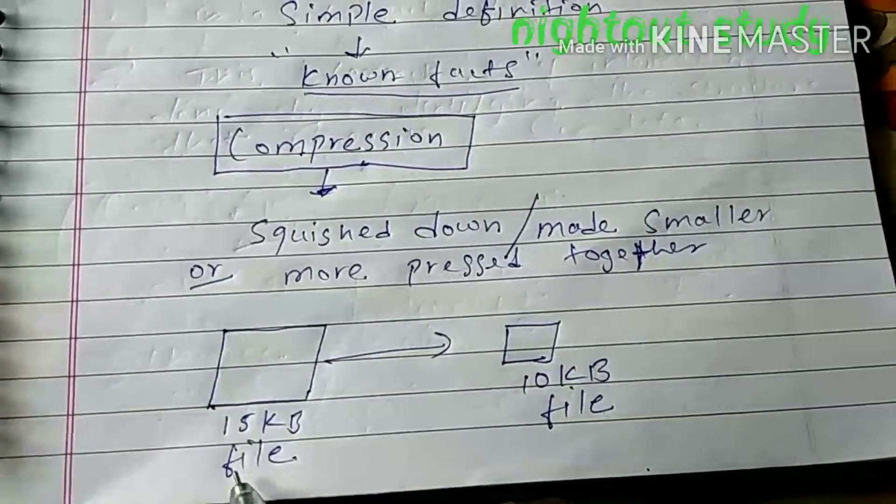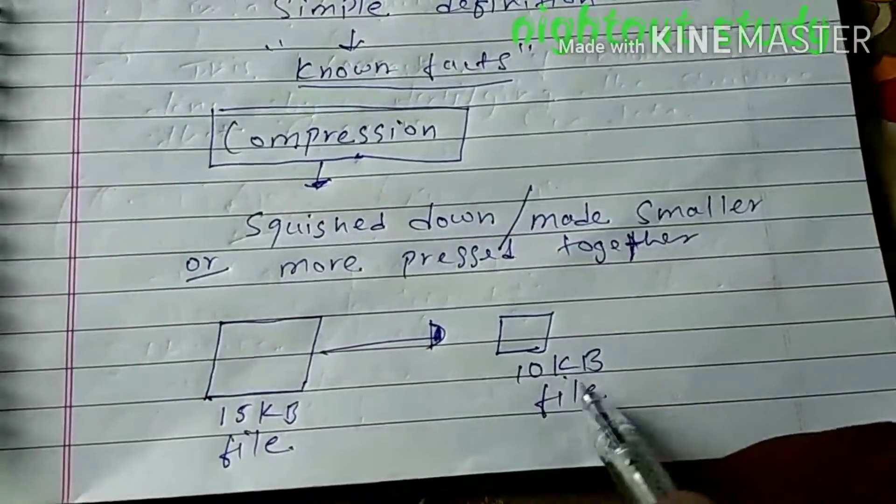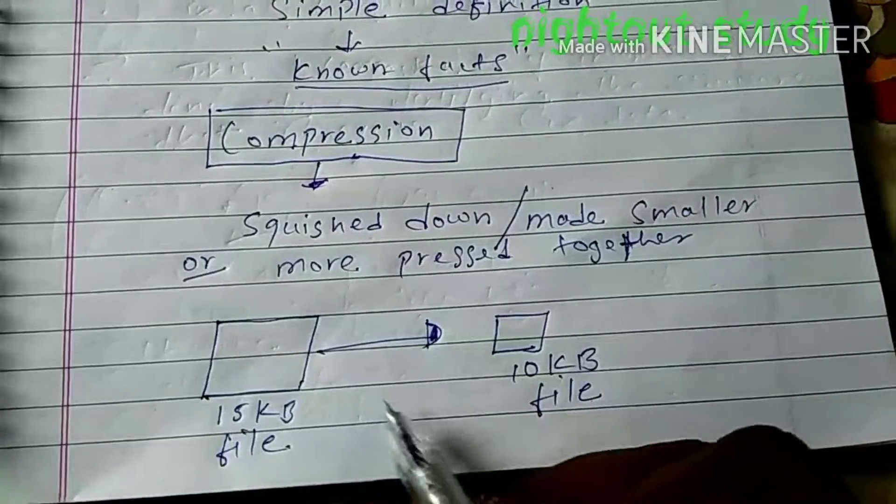For example, let us suppose we have a file of 15 KB, and when we reduce this into a 10 KB file, then this is called a compressed file.